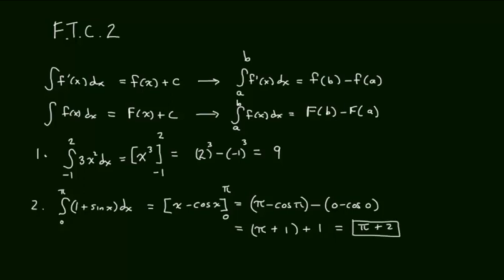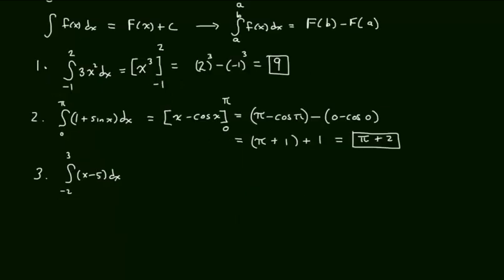That's my integral value. Example 3. Negative 2 to 3 of x minus 5 dx. Antiderivative, x squared over 2 minus 5x. And from negative 2 to 3, middle step is notation.